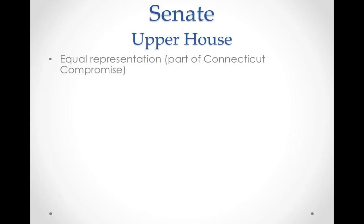You had the Virginia Plan that wanted representation based on population. You had the New Jersey Plan that wanted it based on equal representation. So we get the Connecticut Compromise — Roger Sherman comes in and says, let's have a bicameral legislature: the House of Representatives based on population, and the Senate based on equal representation.